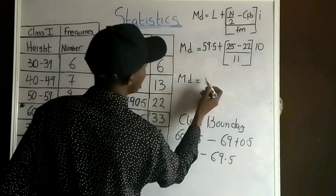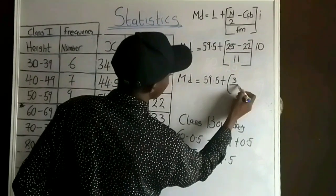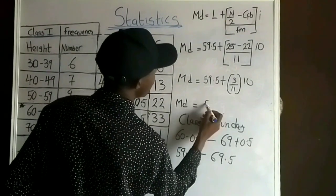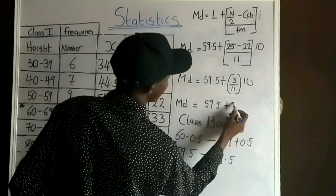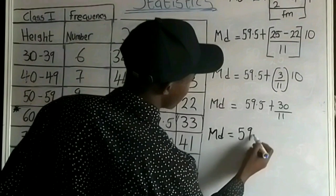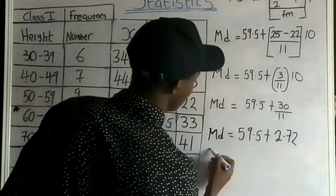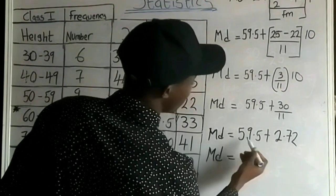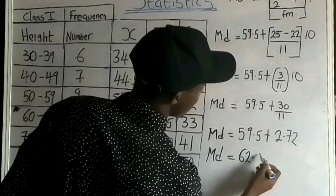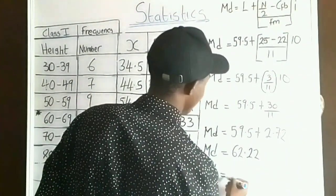The median equals 59.5 + (30/11) = 59.5 + 2.72 = 62.22, so the median is approximately 62.